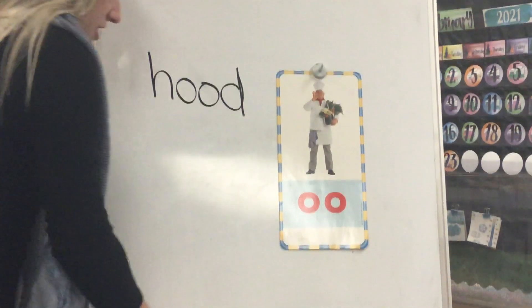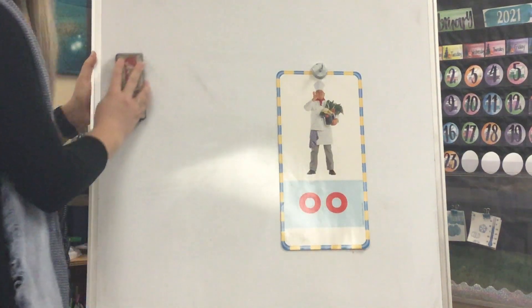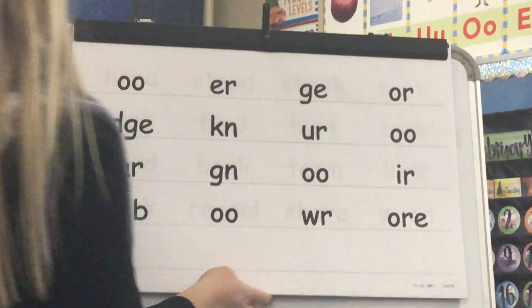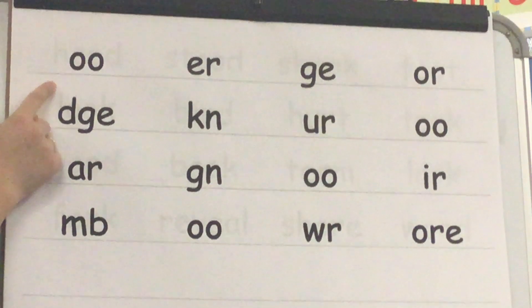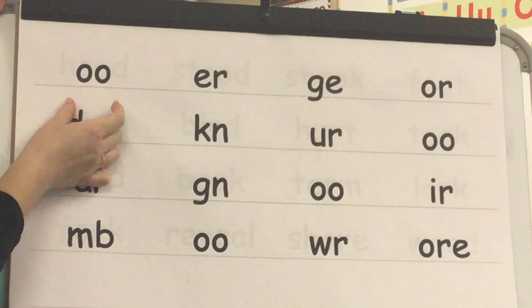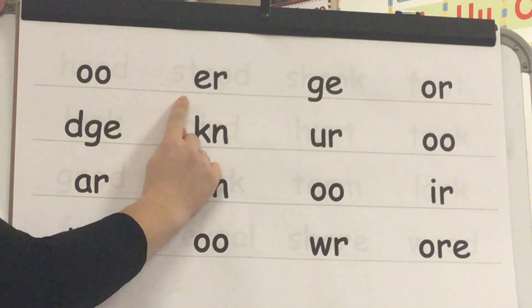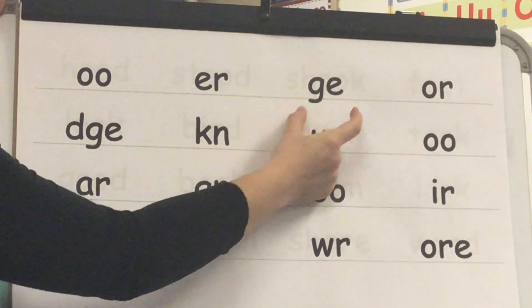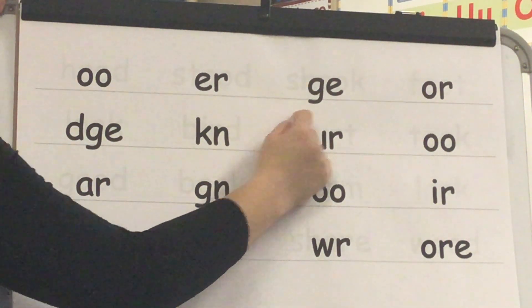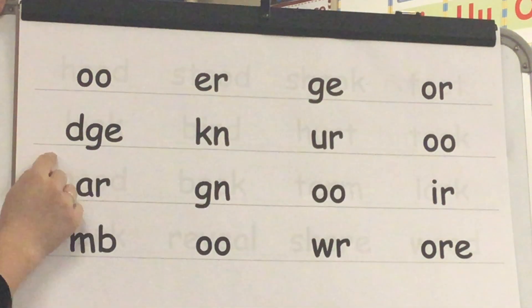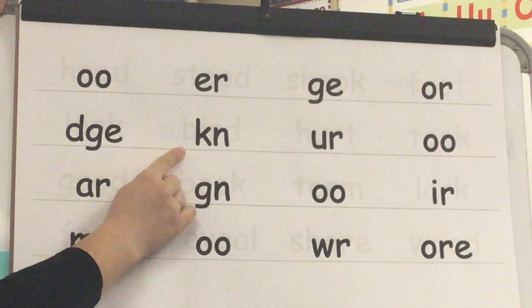Let's practice our sound spellings. Sound: /uh/. Yes, /uh/. Sound: R-R. Yes, UR. Sound: J. Yes, J. Sound: OR. Yes, OR. Sound: J.